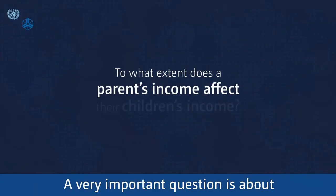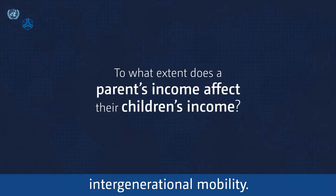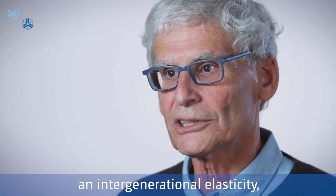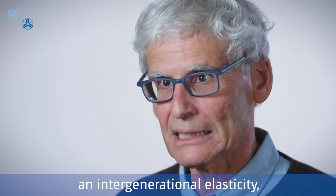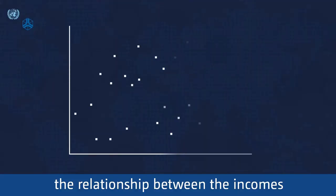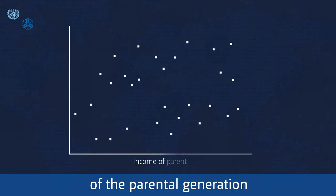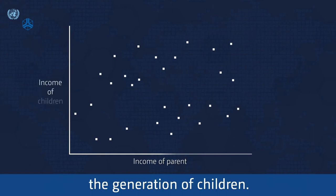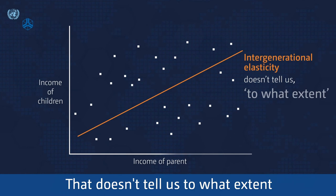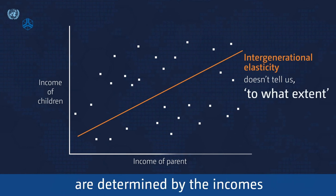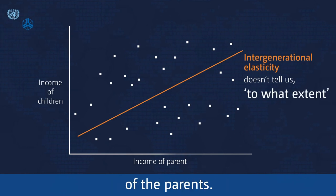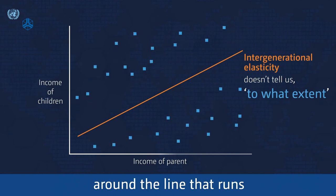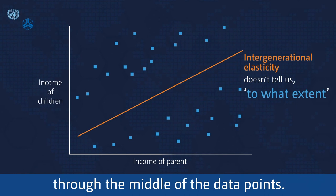A very important question is about intergenerational mobility. What people typically do to answer that question is measure what's called an intergenerational elasticity — the relationship between the incomes of the parental generation compared to the incomes of the generation of children. That doesn't tell us to what extent the incomes of people are determined by the incomes of the parents. What does tell us that is the scatter of the data points around the line that runs through the middle of the data points.